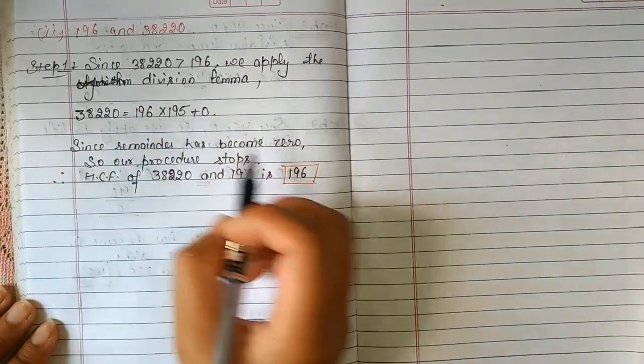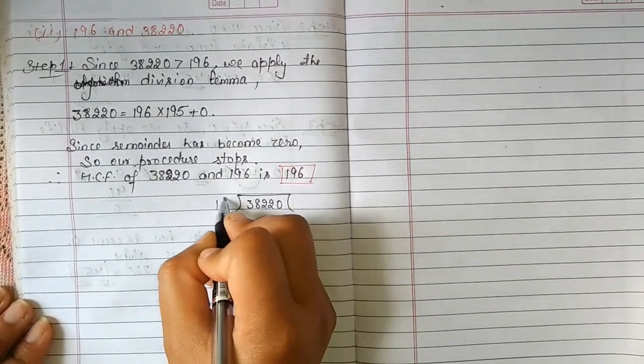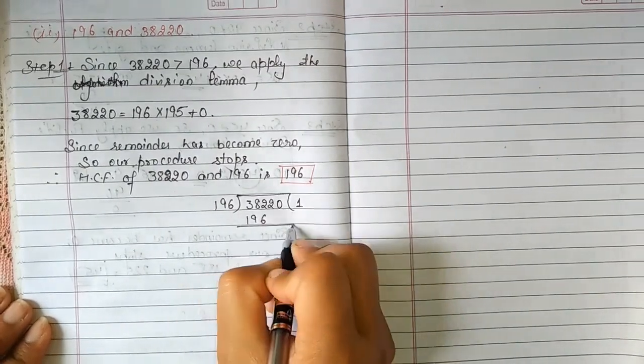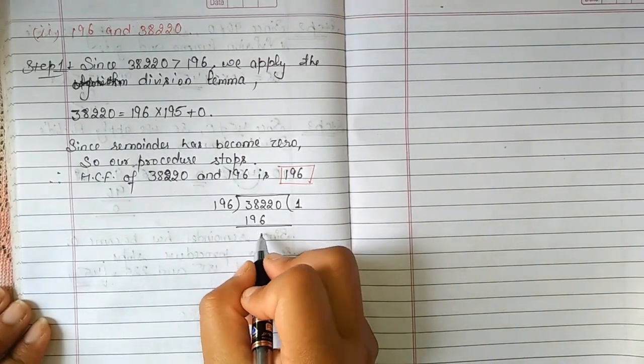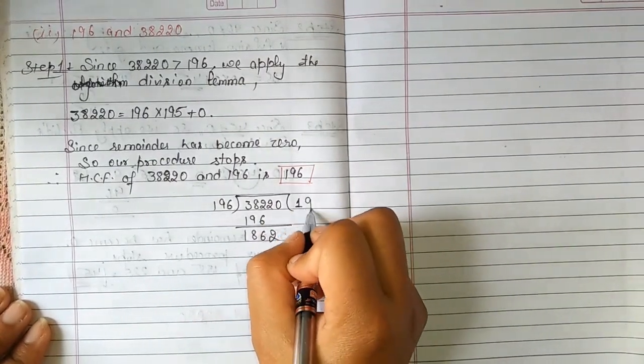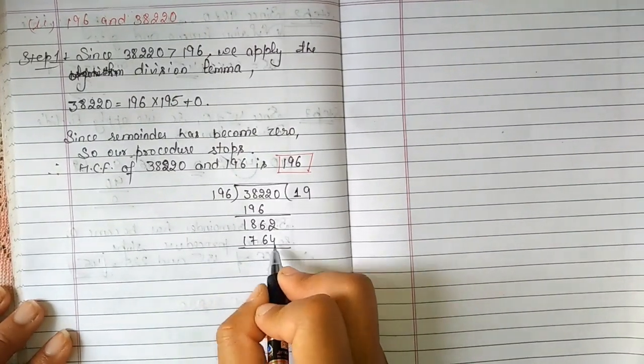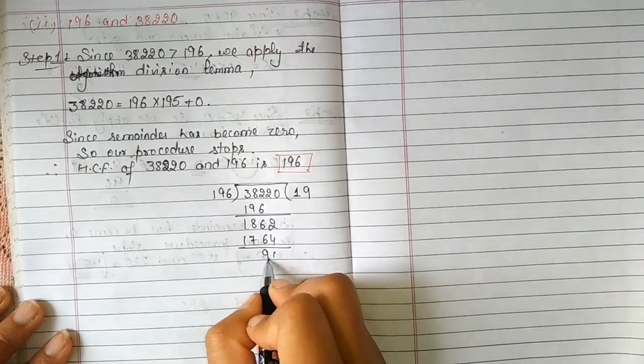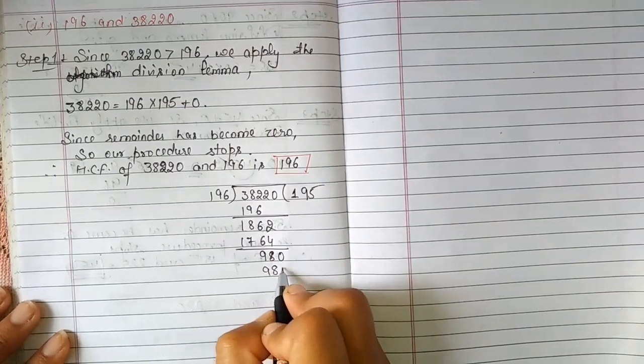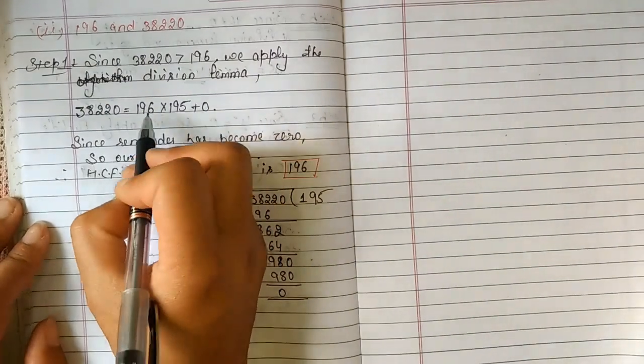If we solve 38220 divided by 196, we divide it: 196 goes in multiple times. Working through the division, we get remainder 0. So the HCF of these two positive numbers is 196. That is our answer.